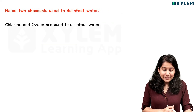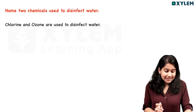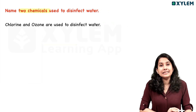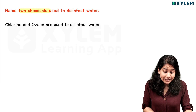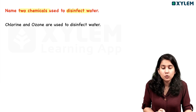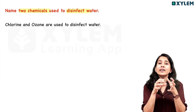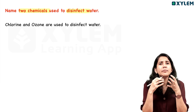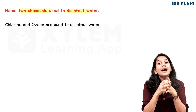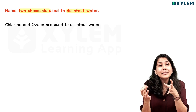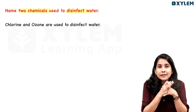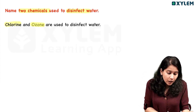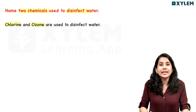We will go to the next question. The next question is: name two chemicals used to disinfect water. If we disinfect the water, we will use two chemicals: chlorine and ozone.